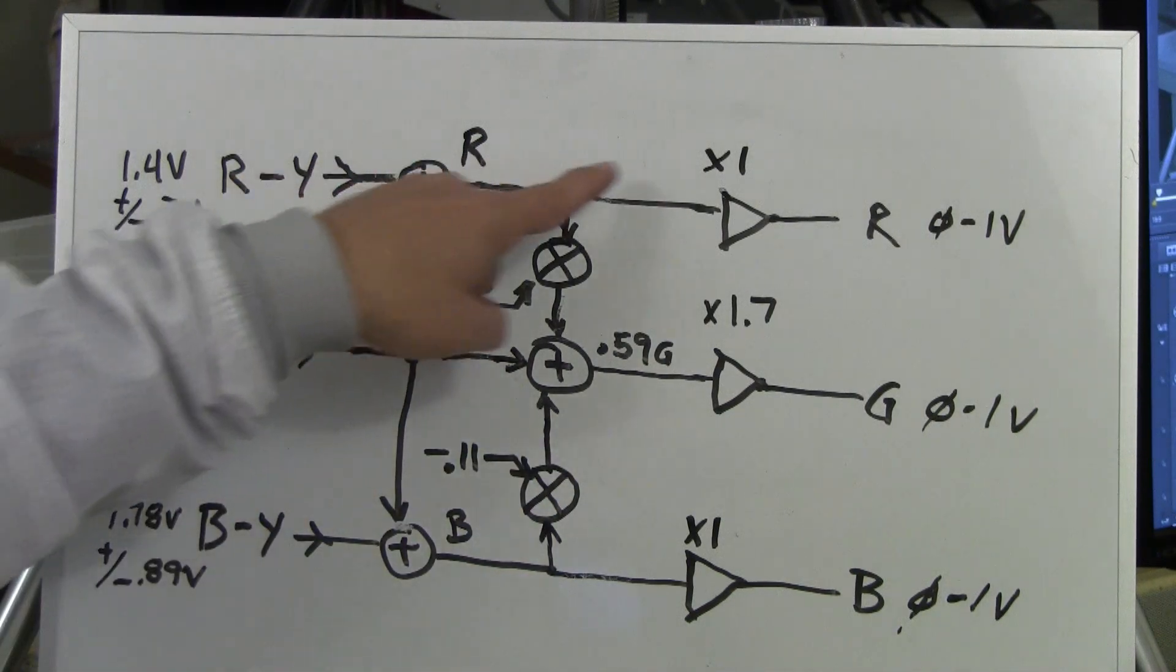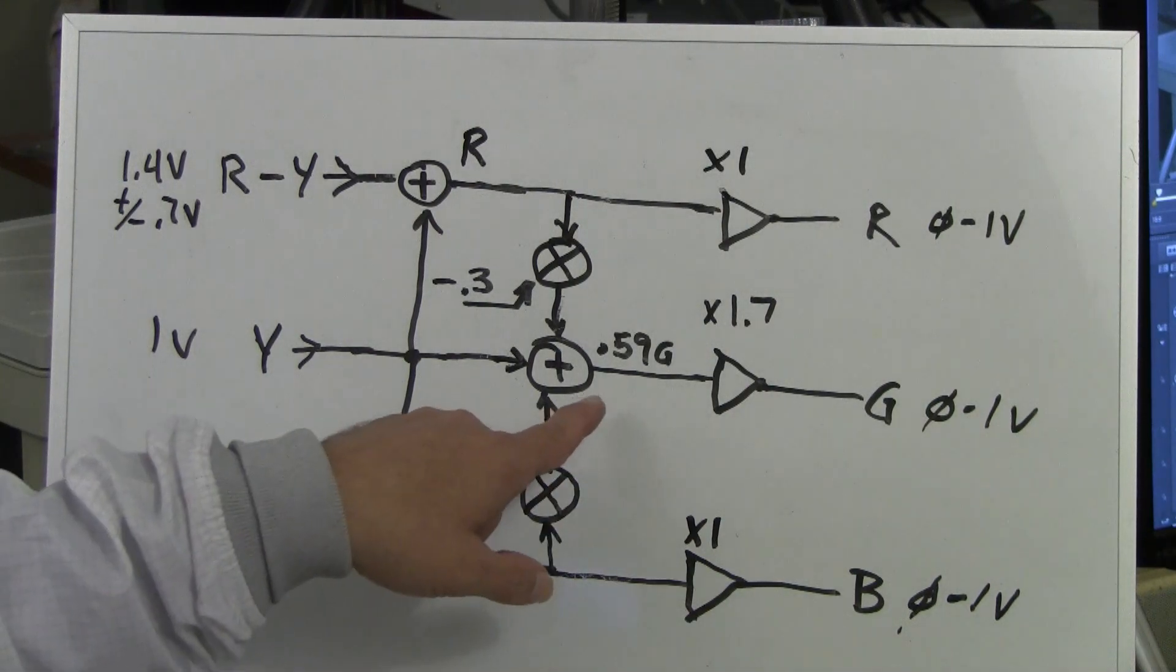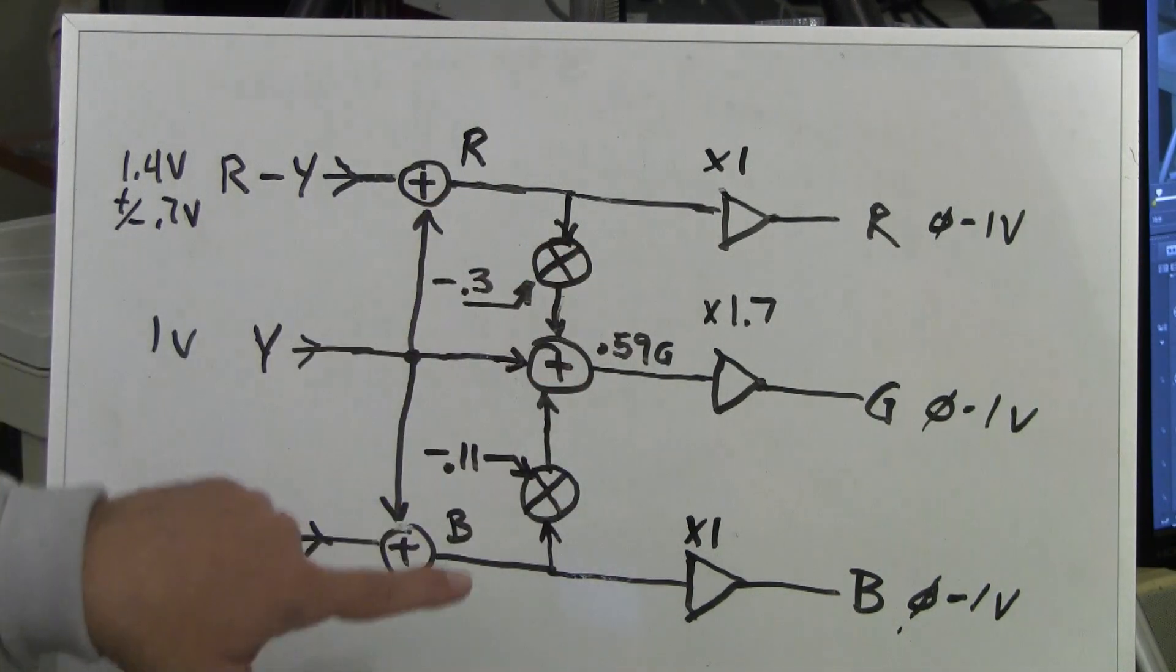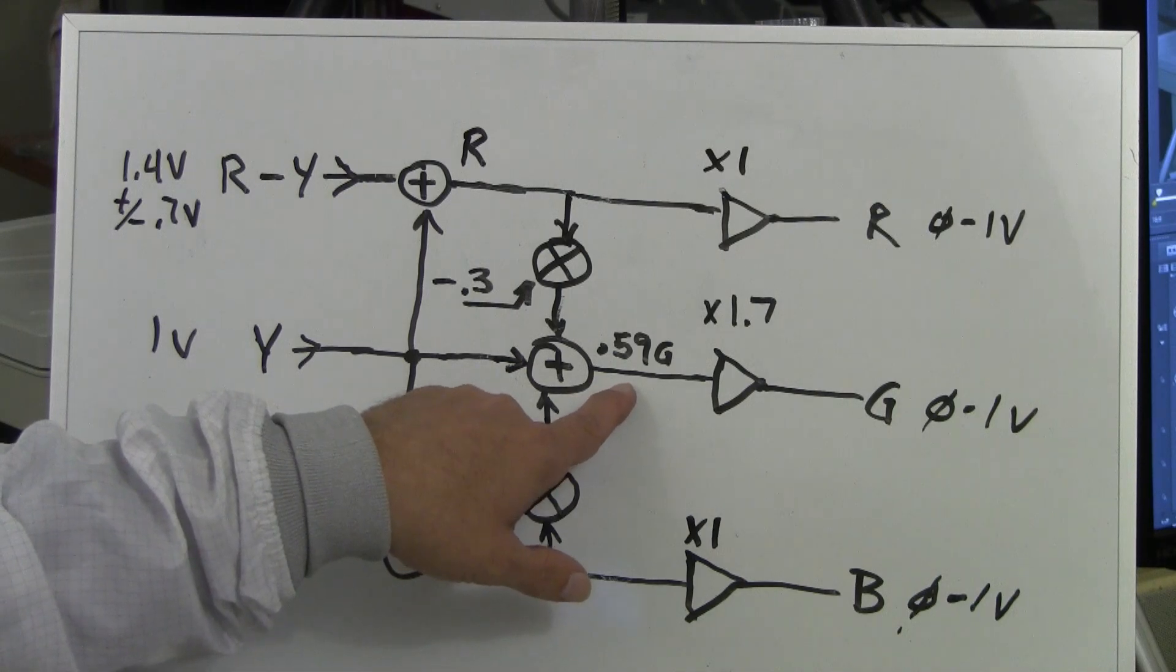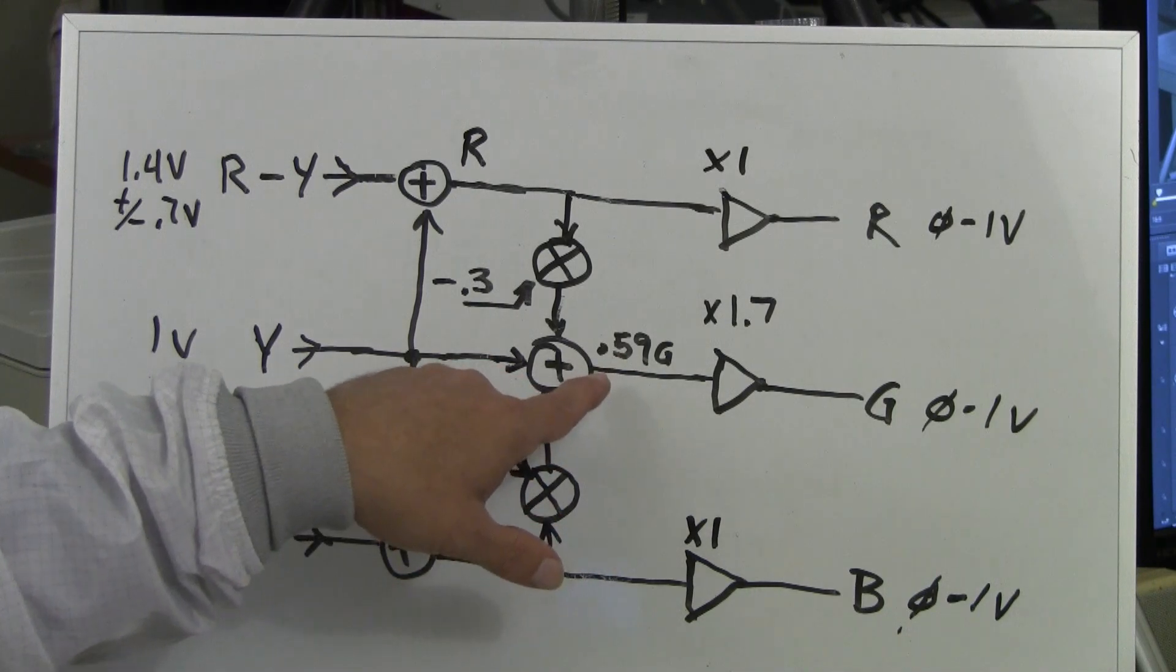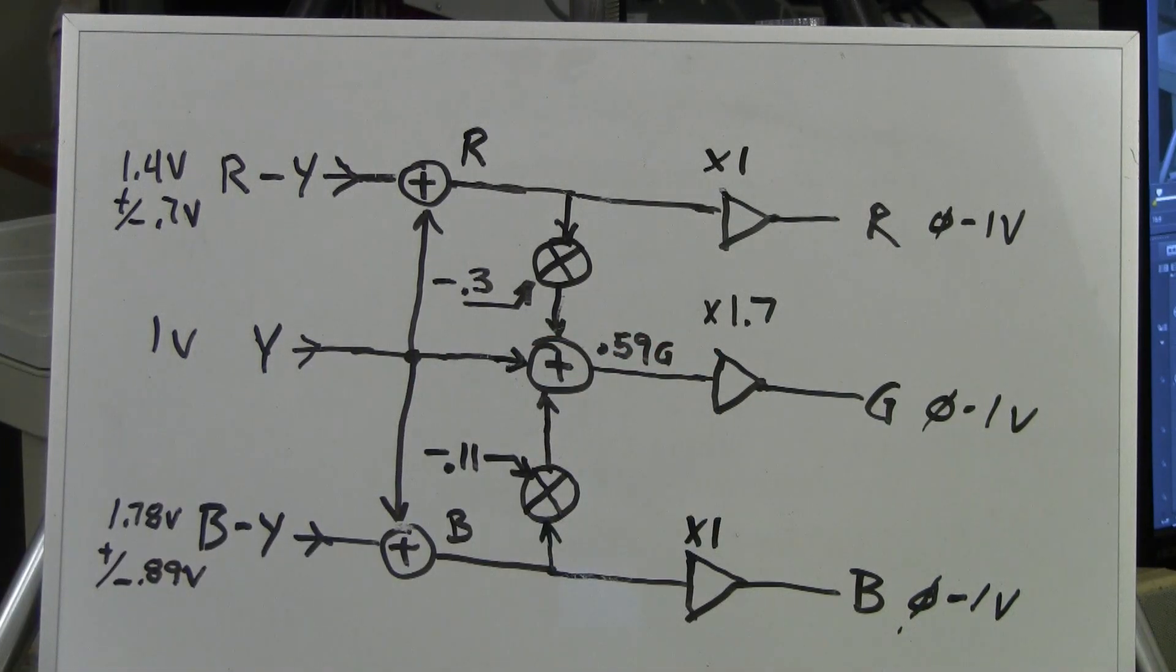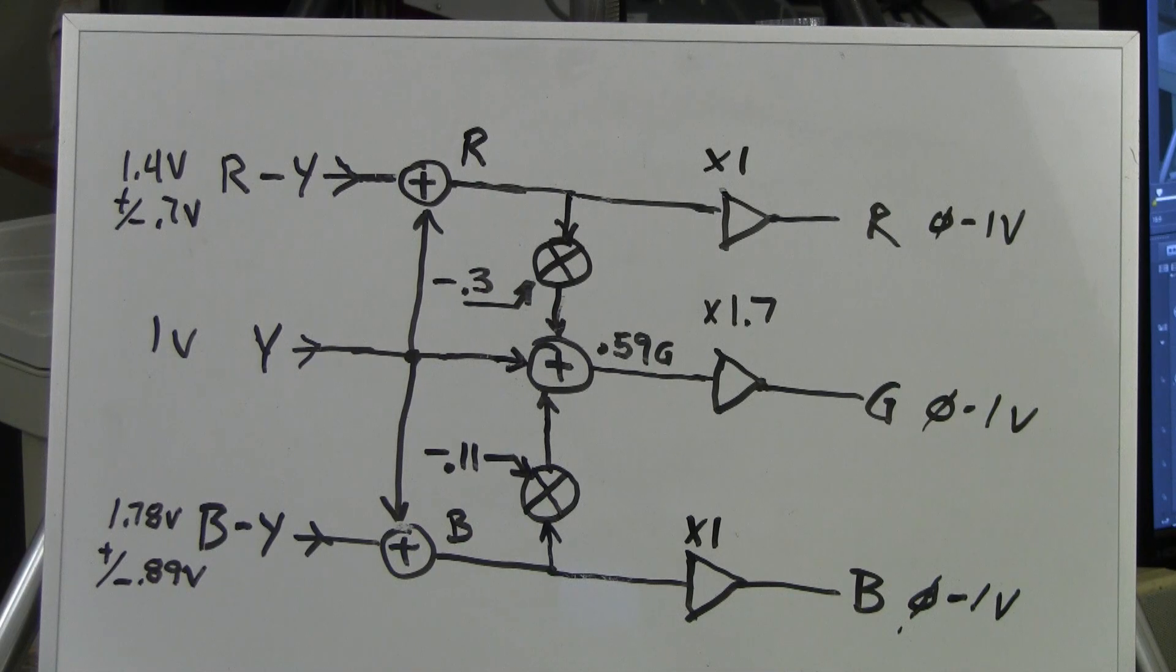Now, red is already the correct level of 0 to 1 volt. Blue is already 0 to 1 volt. So those two signals go through an amplifier of times 1. These are just buffer amplifiers. The green is a little bit low. So we multiply it times the reciprocal of 0.59, which is 1.7, and green is restored to 0 to 1 volt. And that is how the matrix undoes what the camera does. And you get out red, green, and blue video again.